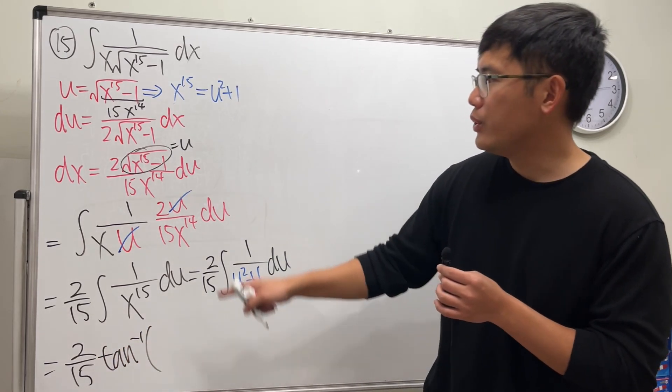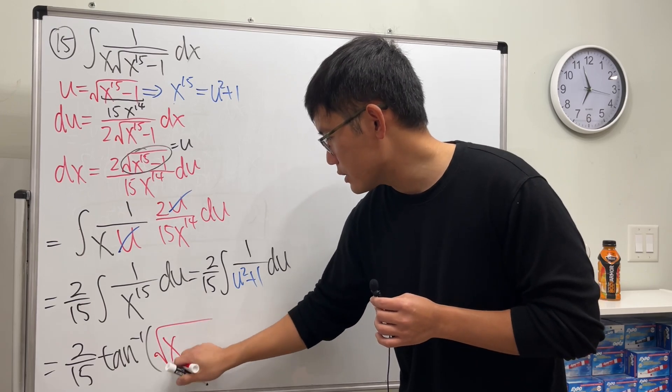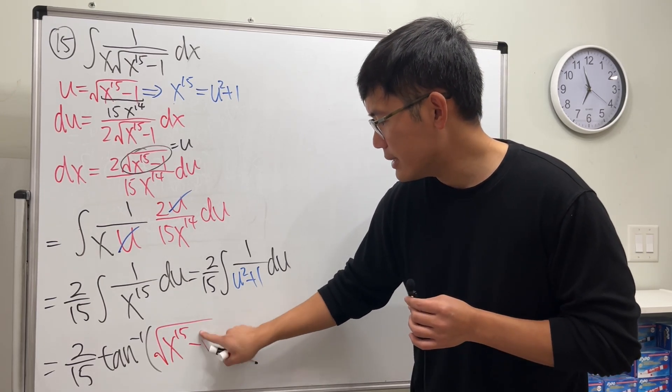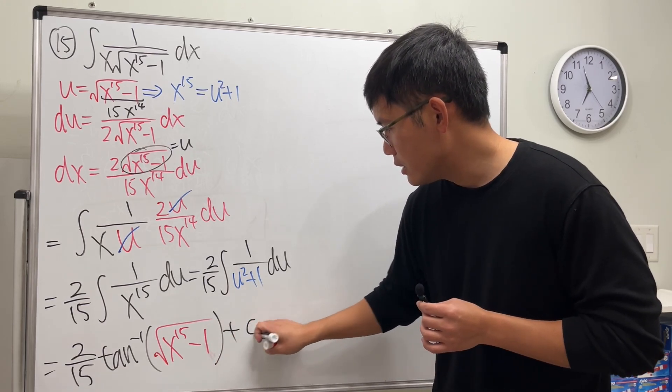And the u is that square root of x to the 15th power minus 1. And with all that, we are done after we put down the plus c. Yay!